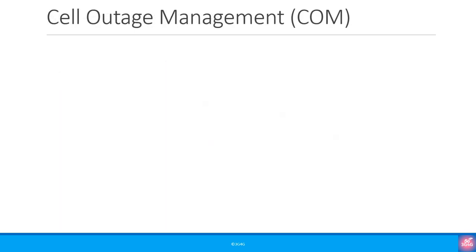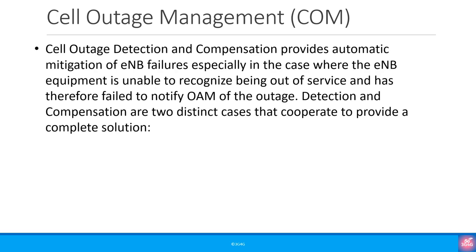Cell outage management, or COM, comprises mechanisms for both cell outage detection (COD) and cell outage compensation (COC). Cell outage detection and compensation provides automatic mitigation of eNodeB failures, especially in the case where the eNodeB equipment is unable to recognize being out of service and has therefore failed to notify the OAM of the outage. Detection and compensation are two distinct cases that cooperate to provide a complete solution.